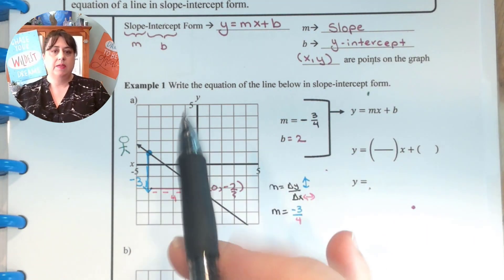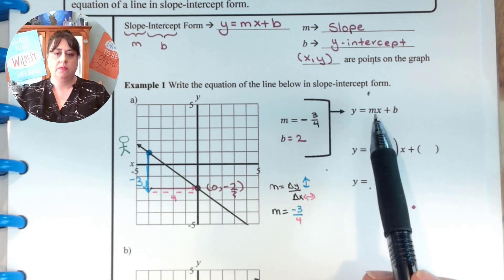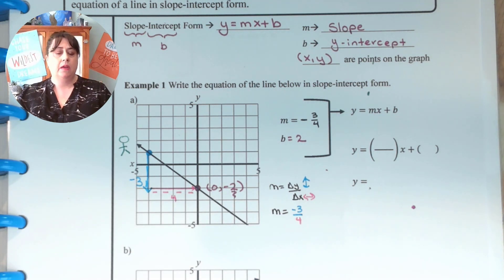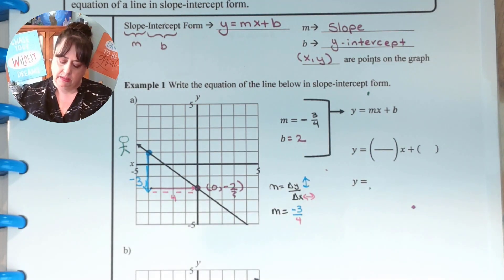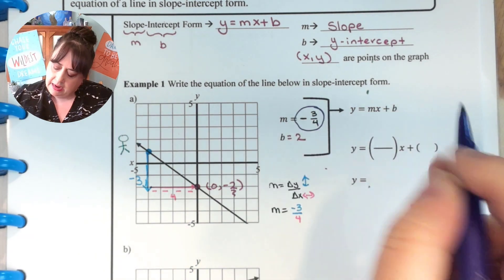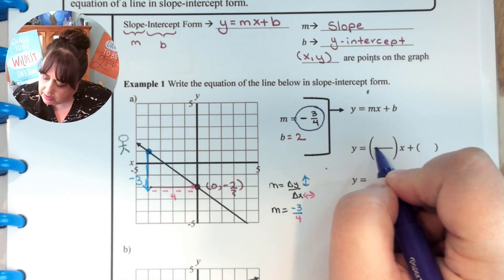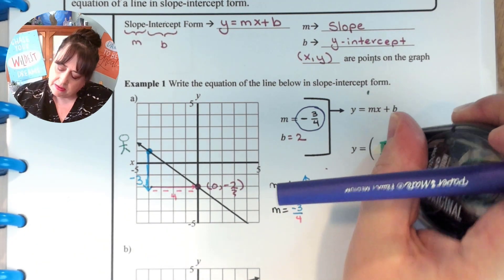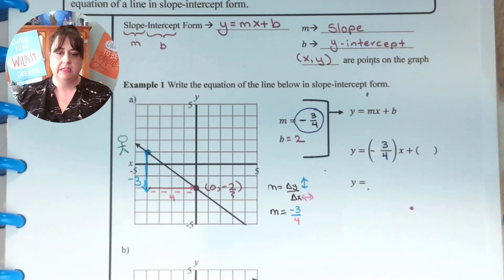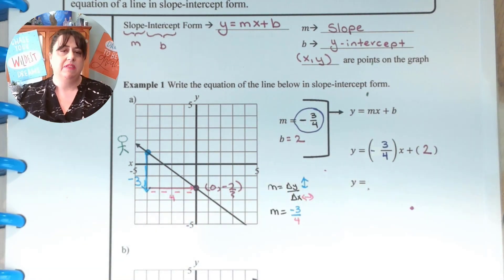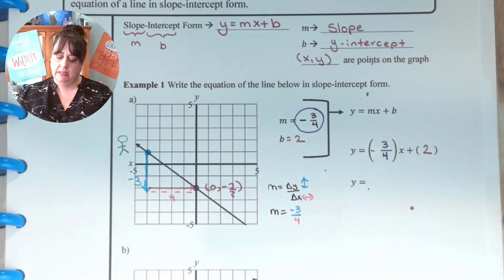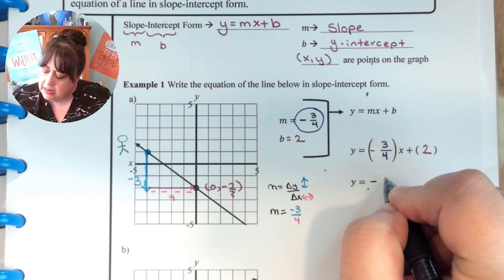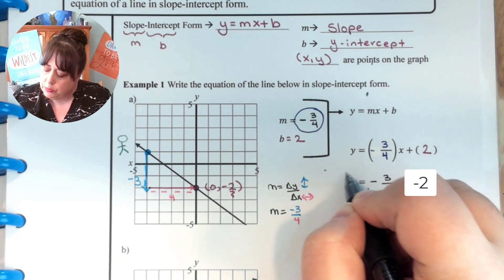Now that we have those, we can substitute it into our slope intercept form equation, which is y equals mx plus b. Y is never replaced and x is never replaced unless we need to use it to help us find other variables. So y equals negative 3 fourths x and then our b is the negative 2. And so now I'm going to get rid of those parentheses. So y equals negative 3 fourths x minus 2. And that is my answer.